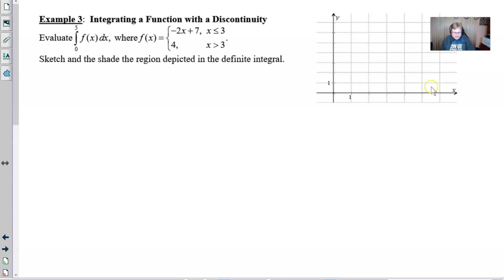Our example says we want to evaluate the definite integral of f(x) dx from 0 to 5, where f(x) is defined as the piecewise function that consists of negative 2x plus 7 when x is less than or equal to 3, and 4 when x is greater than 3.